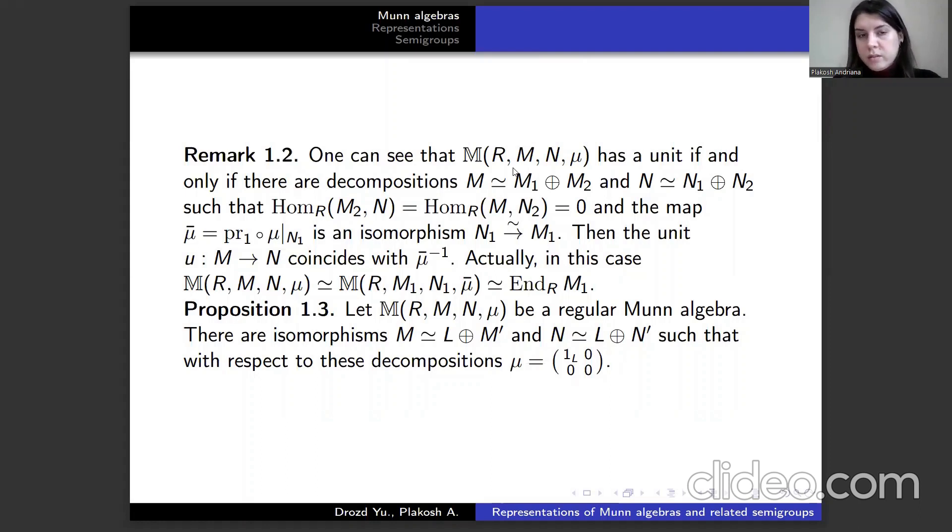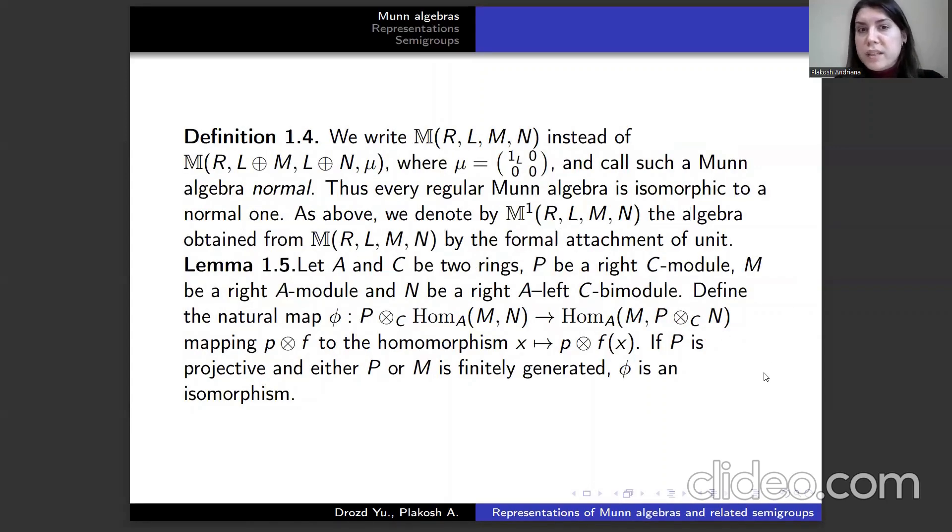Let us formulate a proposition. Let M be a regular Munn algebra. There exists morphisms of M and N such that with respect to the compositions μ looks as follows, and we call such a Munn algebra normal. Thus, every regular Munn algebra is isomorphic to a normal one.